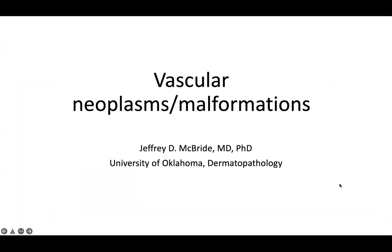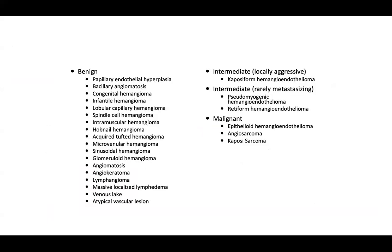We're going to cover vascular neoplasms and malformations in this lecture. Vascular neoplasms can behave in a benign manner, they can be more locally aggressive, they can metastasize, and they can be overtly malignant. So vascular neoplasms can be divided into benign, intermediate behavior, or worst case scenario malignant behavior. This is a list of the types of vascular malformations you may observe in dermatopathology and soft tissue pathology — we will cover most of these today.